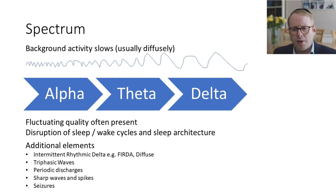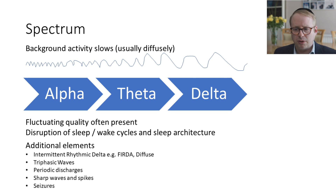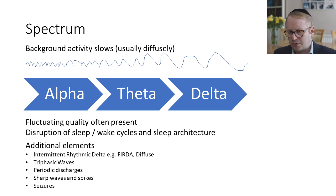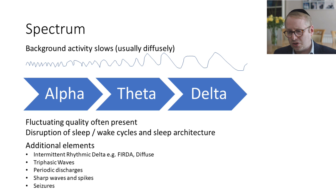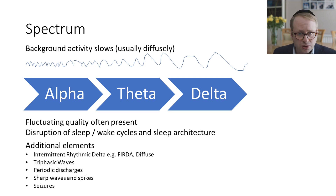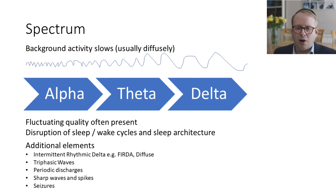There may be some additional EEG elements, whether they are intermittent rhythmic delta waves, more diffuse triphasic waves, periodic discharges, sharp waves, spikes, and seizures. If you're interested in finding out more about them, you're welcome to Google them - it's very easy to see what these things look like.